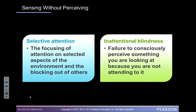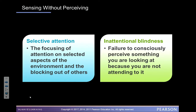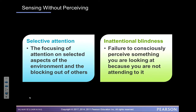Inattentional blindness is the failure to consciously perceive something you are looking at because you are not really attending to it. A way to think about this is daydreaming, where your mind is somewhere else and it looks like you are looking in the right direction — at the professor, for example — but really you are not noticing what's being written on the board or the next page on the PowerPoint. You're out of the loop because you're focused inwardly in your head on something else.